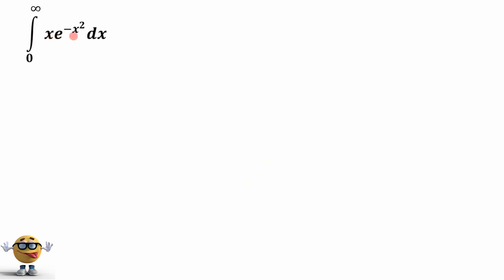So the first thing we're going to do is set up a u substitution, u equals negative x squared. And we're going to do that because the derivative of the exponent is here, x dx, or close to the derivative of it.